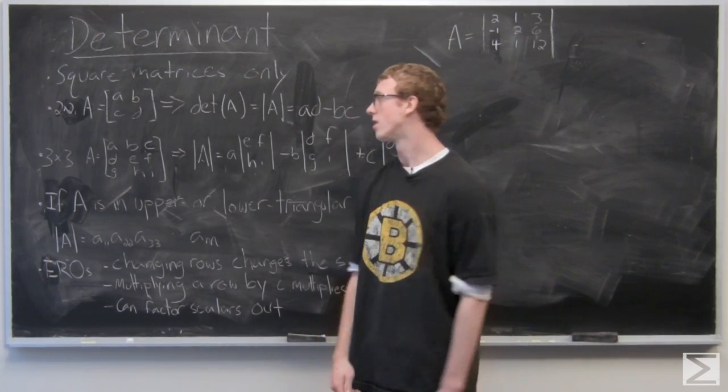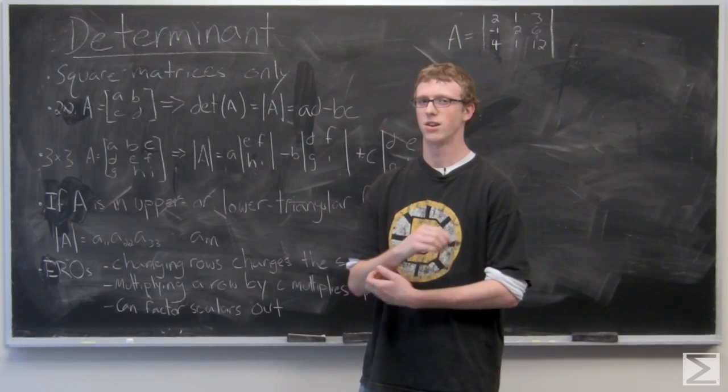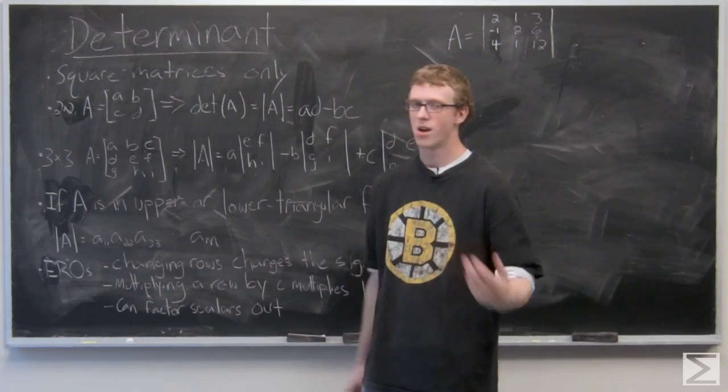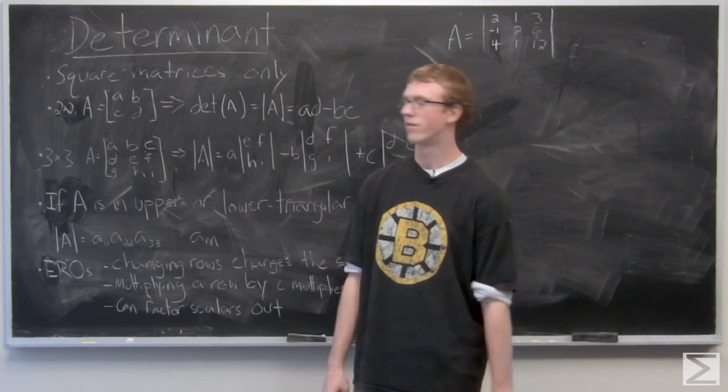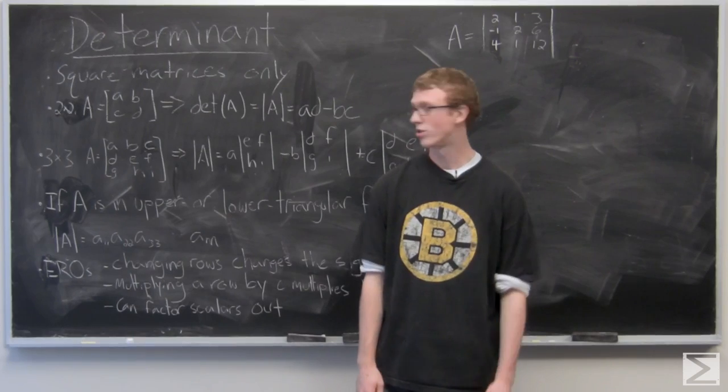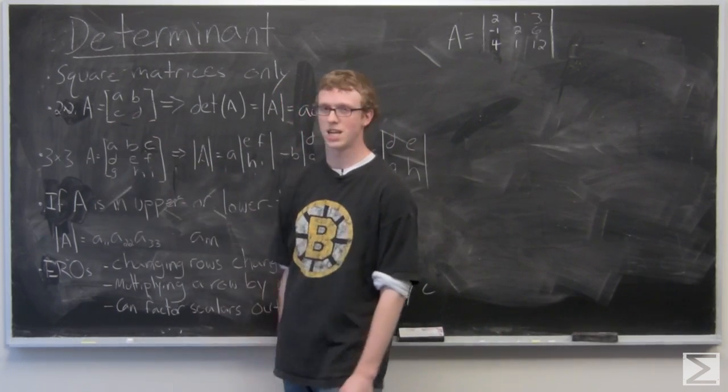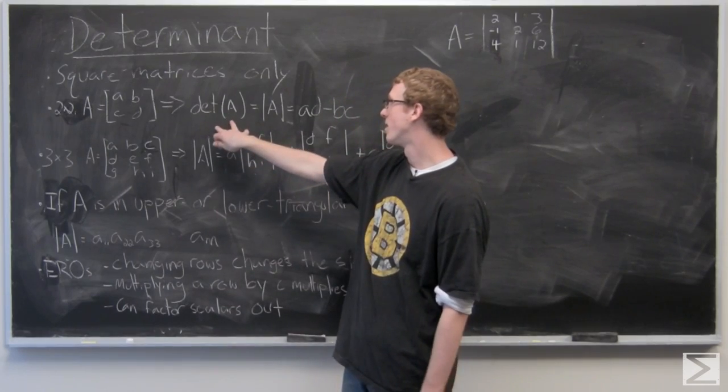The determinant is a scalar value. It's used in cross product often and is not a scalar when it's used in cross product, but right now we are looking for the scalar value of determinant. So the determinant of a two by two matrix A, it's very simple. We have a two by two matrix ABCD.